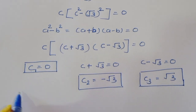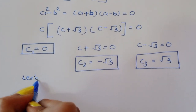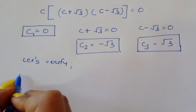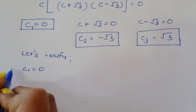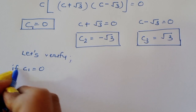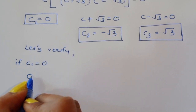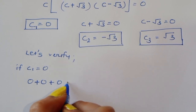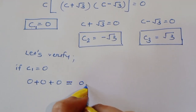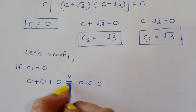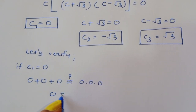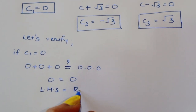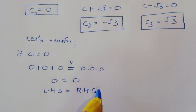Let's verify. First, if c₁ equals 0: 0 plus 0 plus 0 equals 0 times 0 times 0, so 0 equals 0. LHS is equal to RHS.